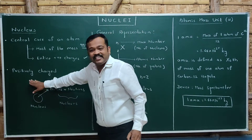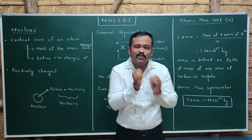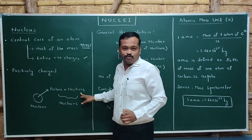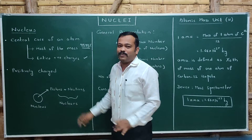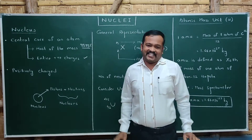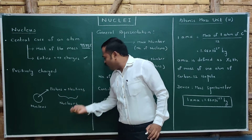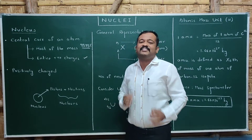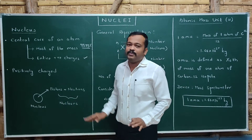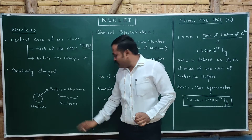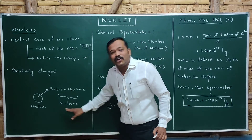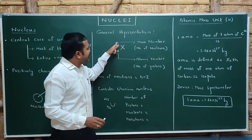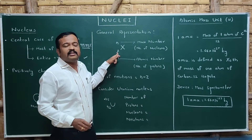The nucleus is positively charged because all positive charges are present inside it. The nucleus consists of protons and neutrons. Protons are positively charged particles and neutrons are neutral in charge. Together, both are called nucleons — nucleons are the particles present inside the nucleus, whether proton or neutron.